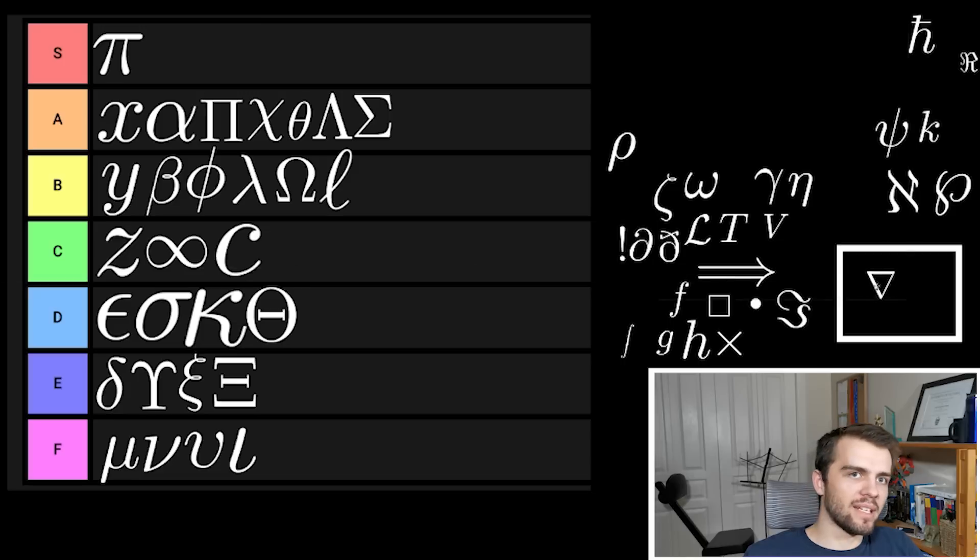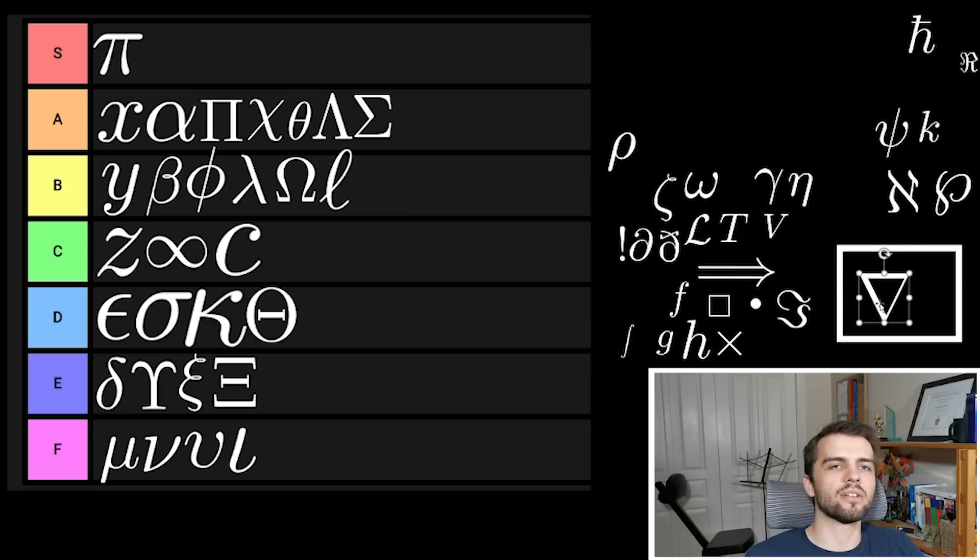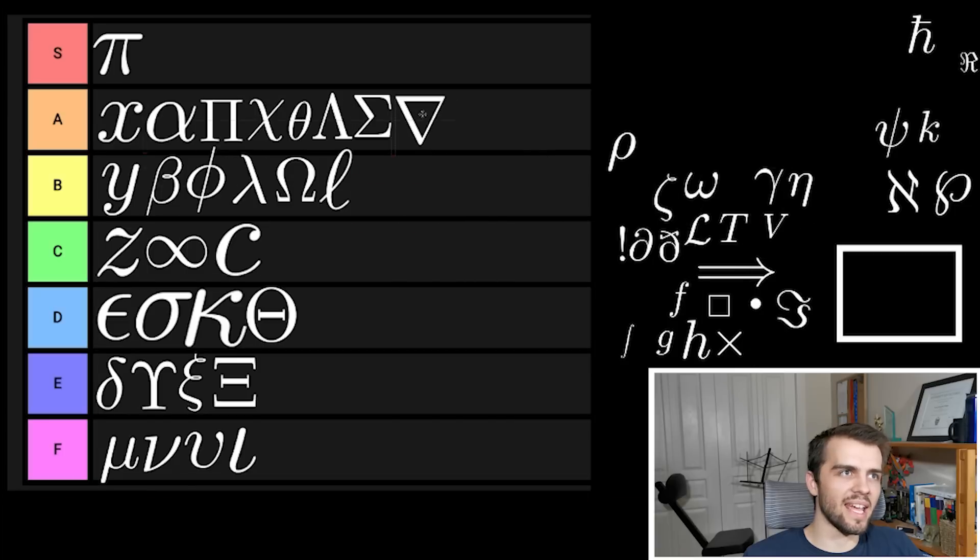Next we got nabla. Nabla is an operator, the gradient. It can be used to represent many things. If you put a little vector over it, it's also a different symbol in math. It's just an upside-down triangle, very basic but not much to it. I kind of like that and I think I'm going to have to put it A tier.